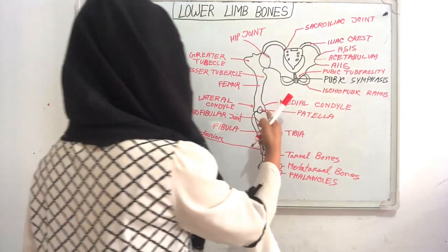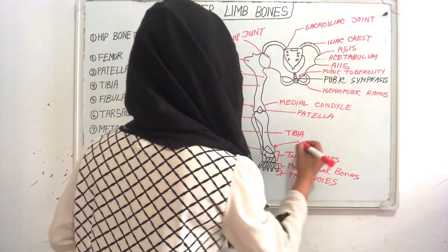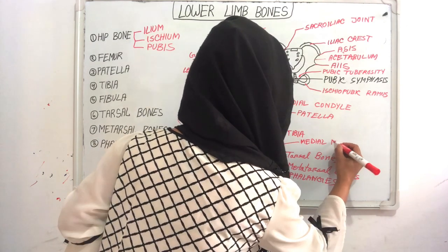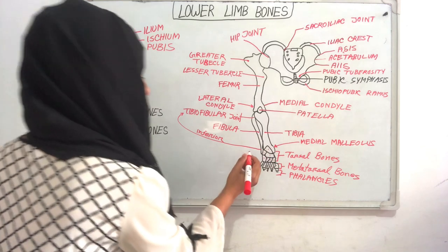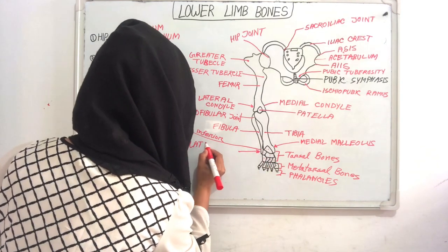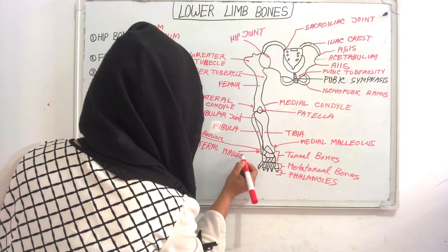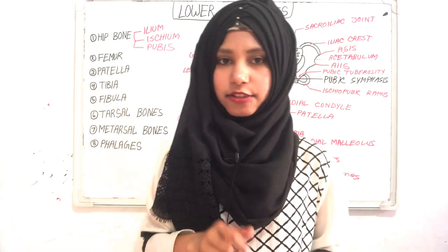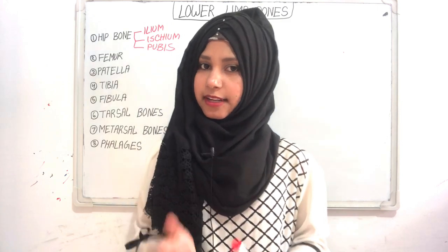The distal part of the tibia makes the medial malleolus, and the distal part of the fibula makes the lateral malleolus. These are all the important structures of lower limb bones, and our tarsal bones each have a different name.